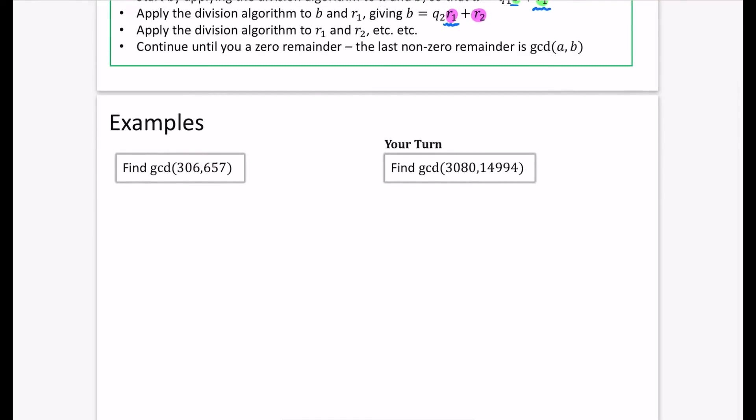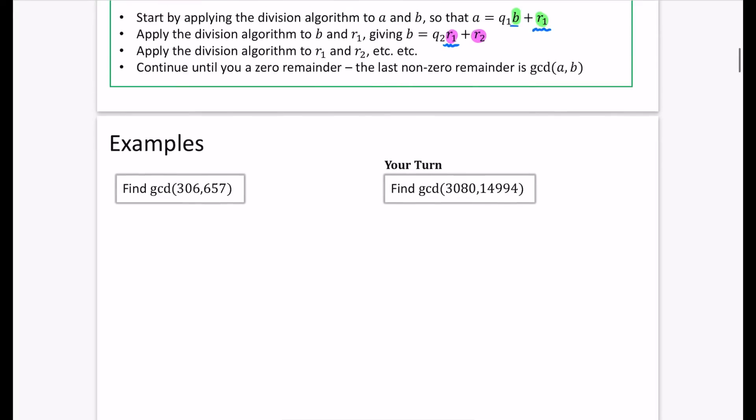Now, it does work doing it either way around, but commonly people will always put the bigger one first. So we will start off with this one applying the division algorithm to 657. So we're thinking of 657 essentially divided by 306. So 657, if you divide it by 306, you get two point something, which means it's two lots of 306. So two times 306, that's 612. 657, take away that, is 45. So there is my B, which is the B I had from before, the 306. And there's that remainder 45.